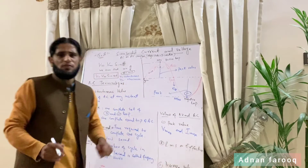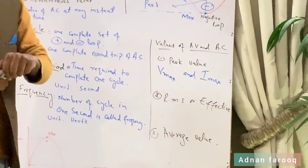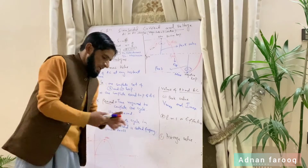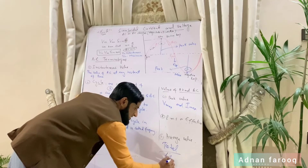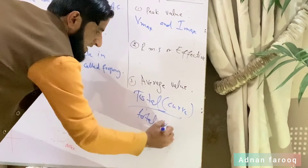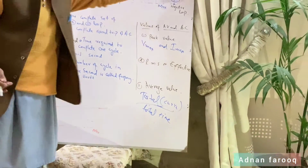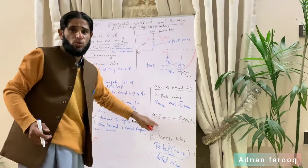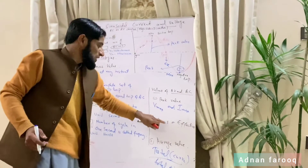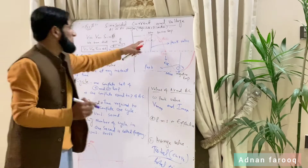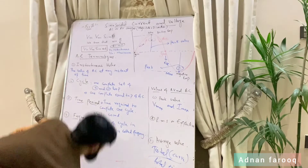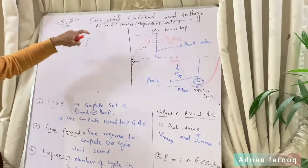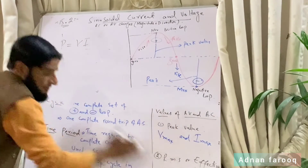Average value: if we talk about curve, total area of curve divided by total time is known as average value. In the average value case, when positive and negative peaks cancel, power becomes zero.